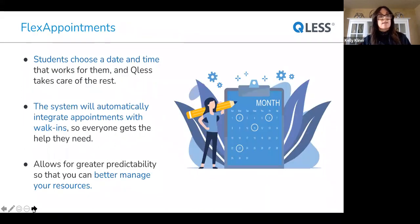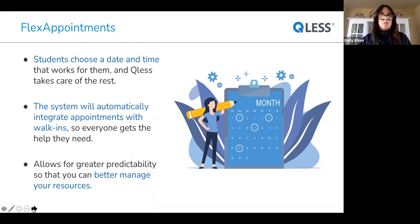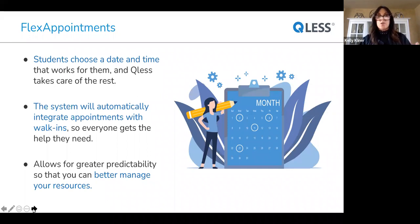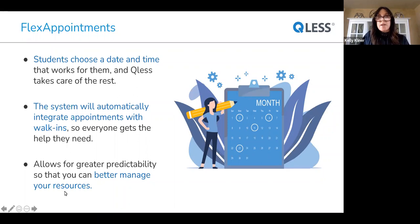Some of the great features that QLIS has — Flex Appointments is one. QLIS is at its core a queue management solution, and that's what we've been doing since 2007. But in addition to that, we can also be a scheduling tool, and we call our appointments Flex Appointments. Students can choose the date and time that works for them and QLIS takes care of the rest. The system will automatically integrate appointments with walk-ins so everyone gets the help they need. If you're an advisor and you have students joining queues as drop-ins or scheduling appointments, both types of visits are integrated in the same single pane of glass. So your staff isn't having to toggle back and forth between systems — everyone is listed together. This also allows for greater predictability so that you can better manage your resources.